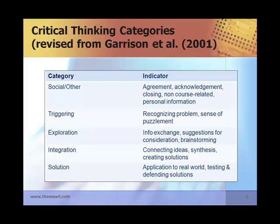We selected the Garrison model because of its ease of use. It also has a high level of inter-rater reliability, which we discovered in a previous study in 2007. Earlier studies show that students posted heaviest at the middle levels of exploration and integration using this model, and we had the same results from our previous studies.